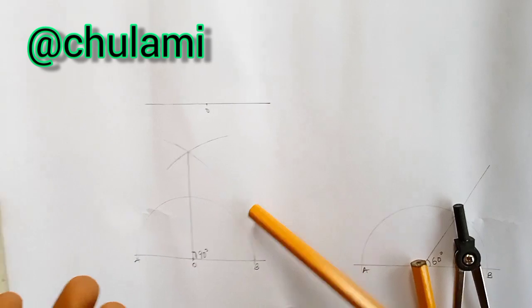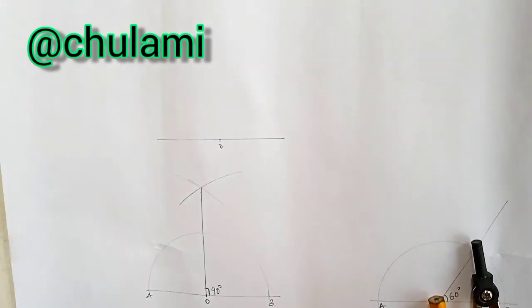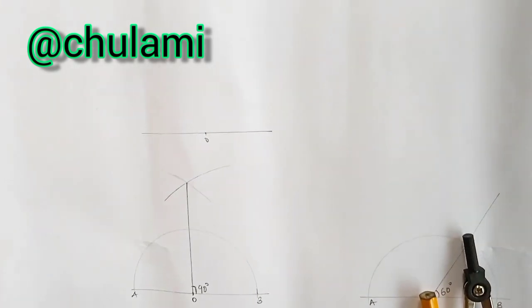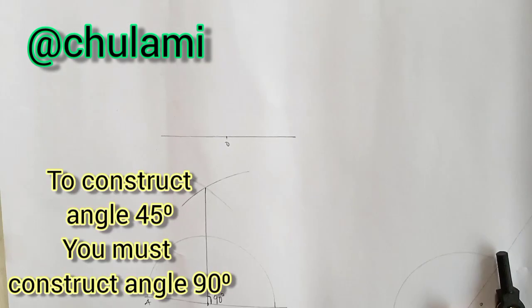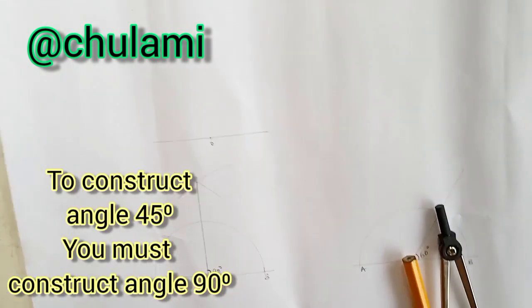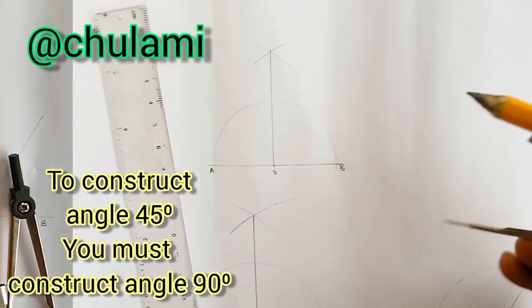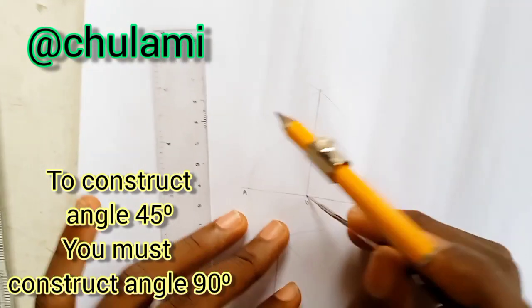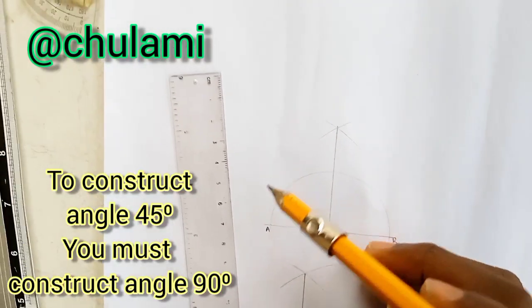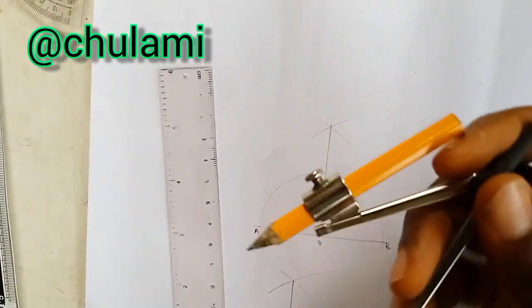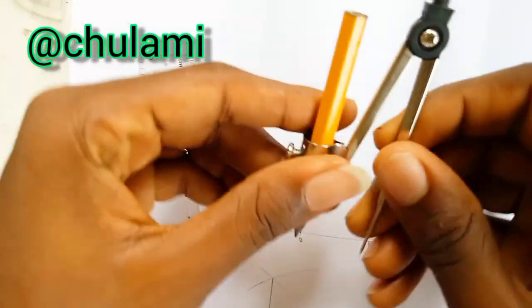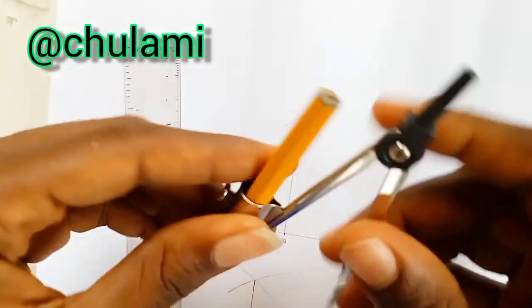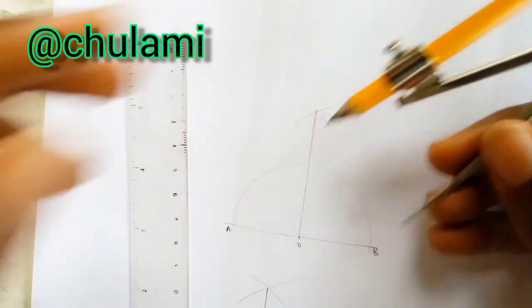Now, as for angle 45 degree, you can decide to use angle 90. This one we've already done, but for you to get angle 45, you must first of all construct angle 90. So, I'll construct angle 90 first and then I'll show you how it is. We have this angle 90.